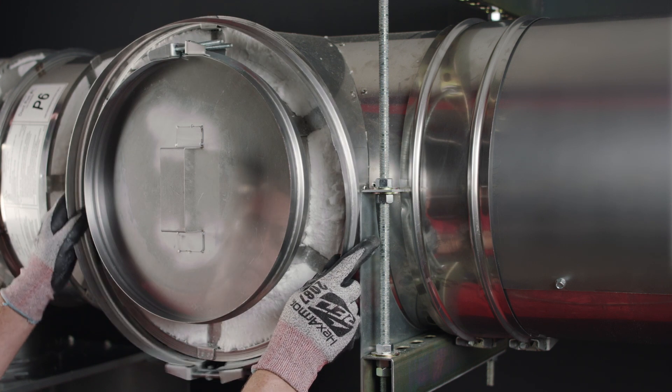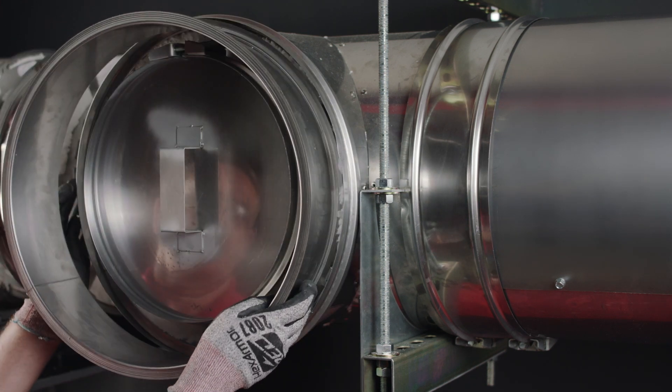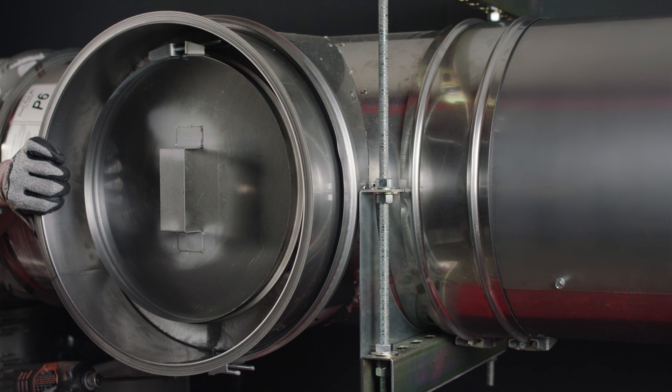Once the inner access door assembly is complete, install the access collar and secure it by tightening the V-band.